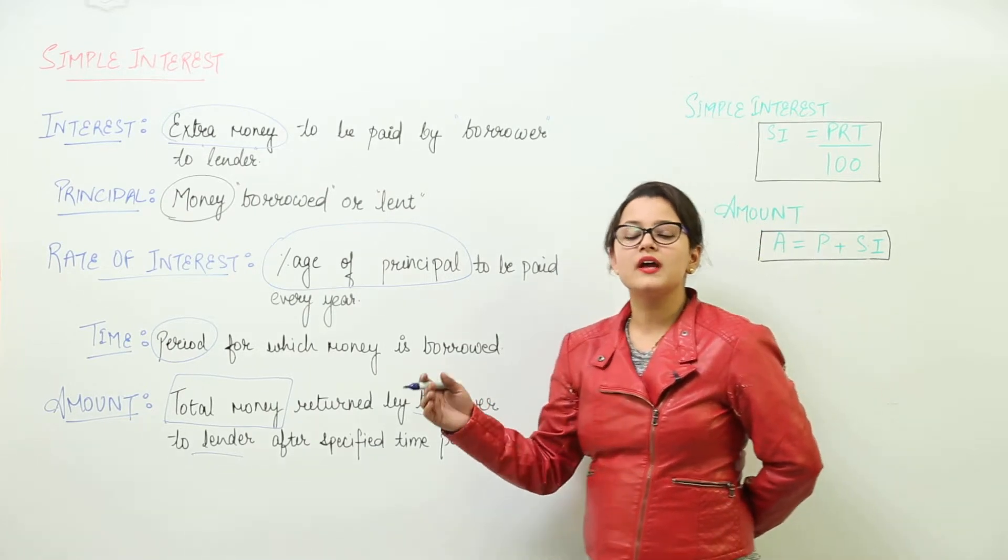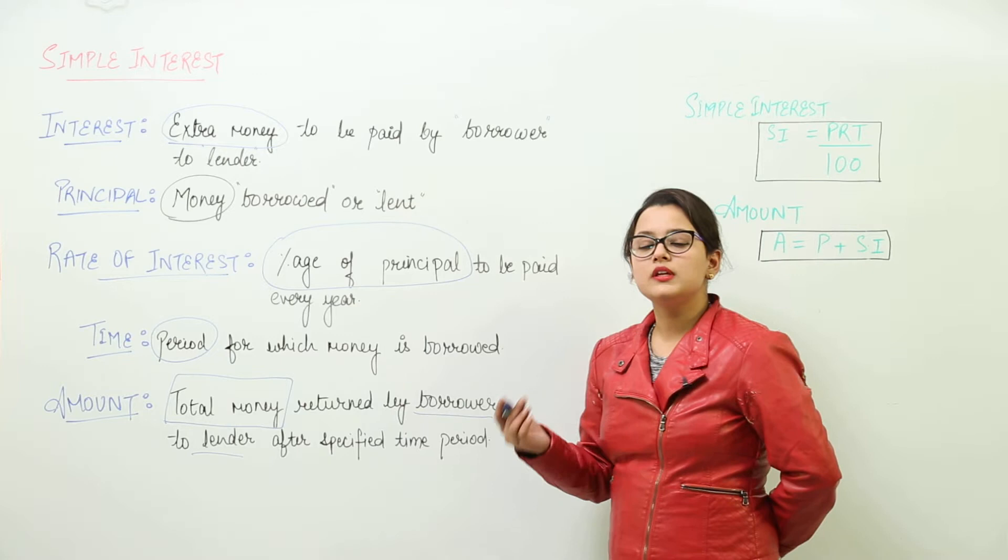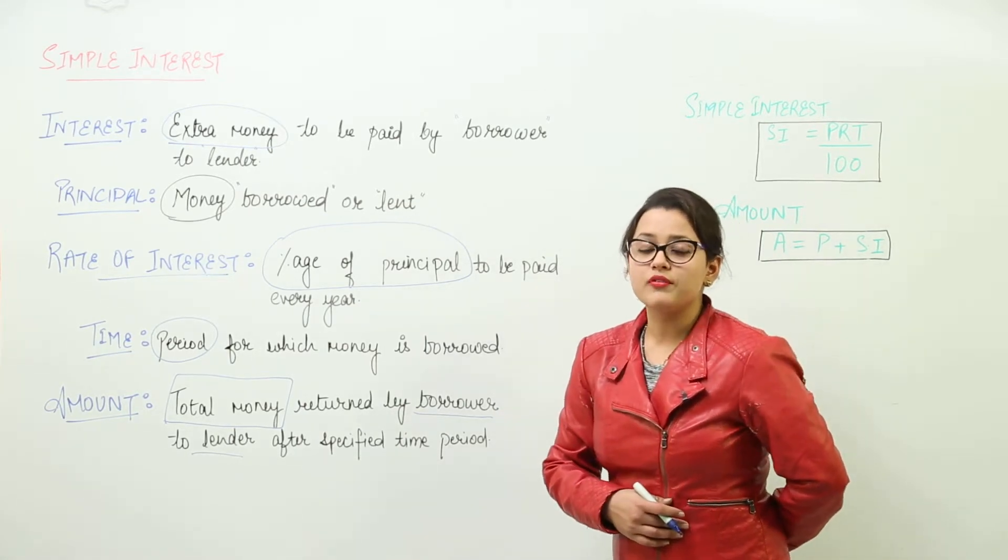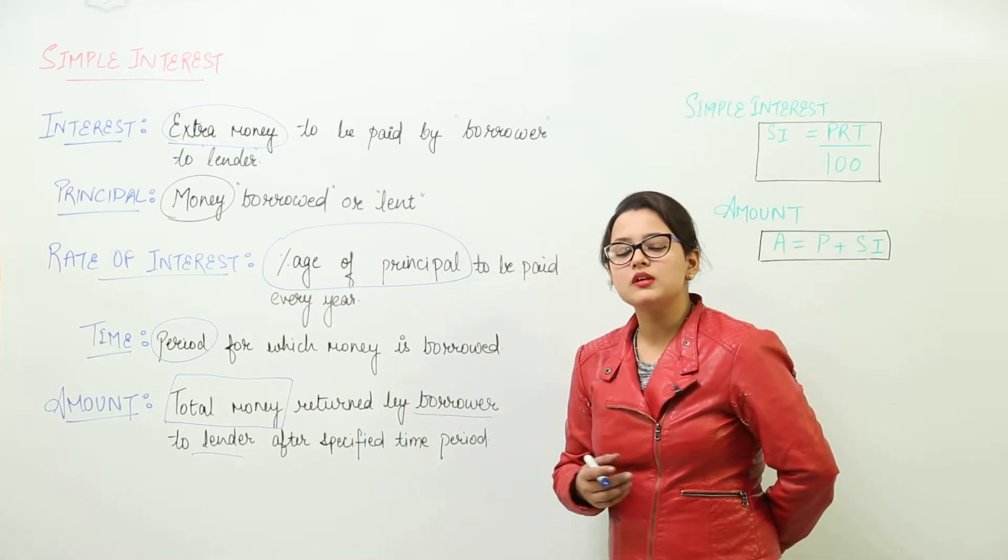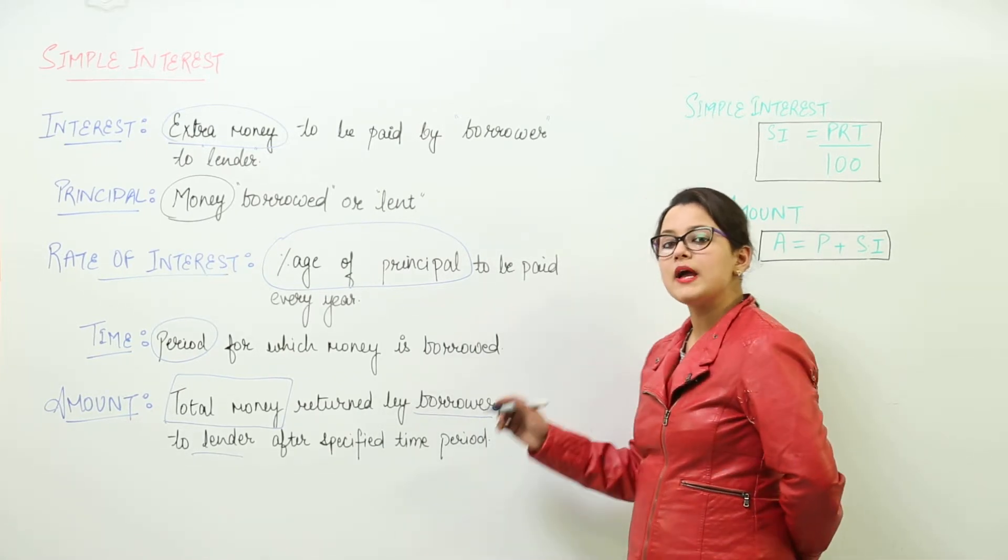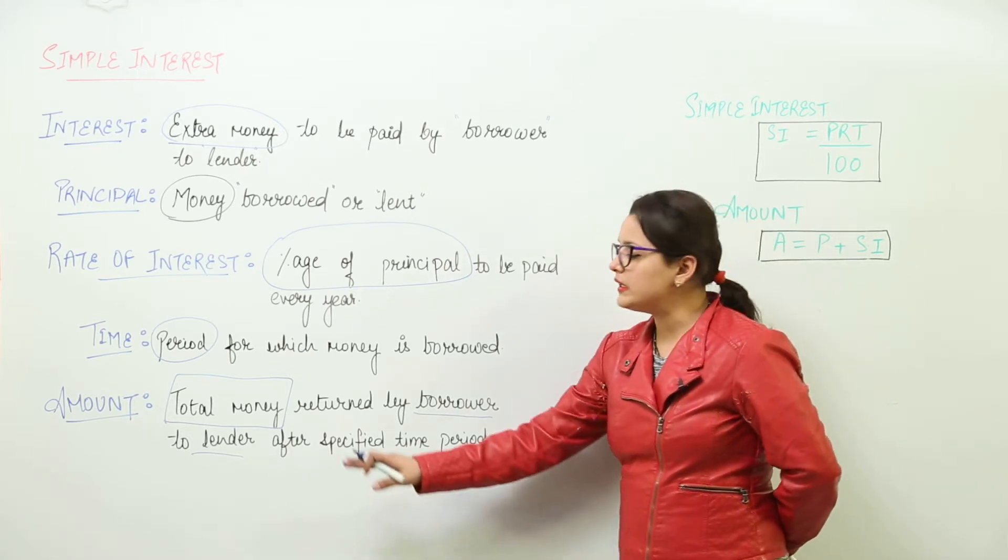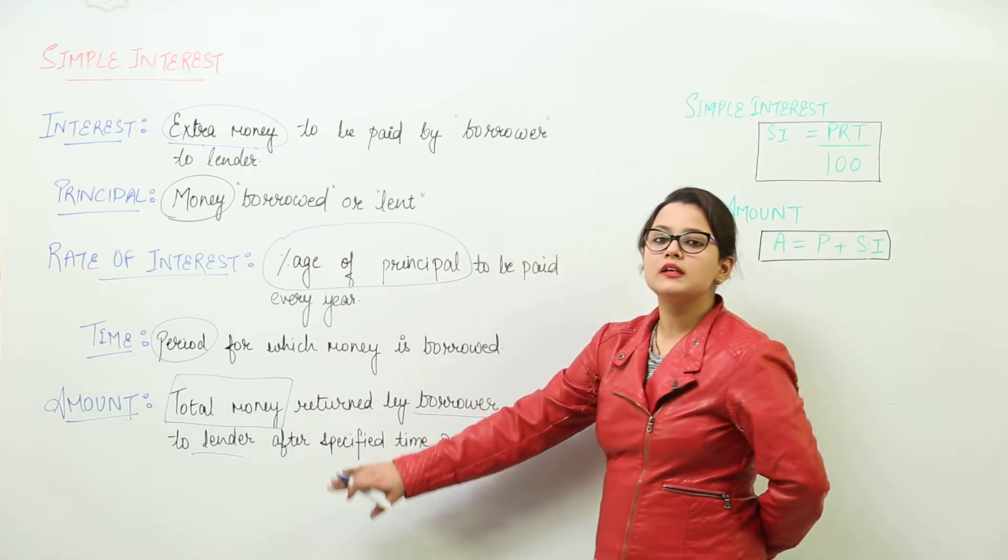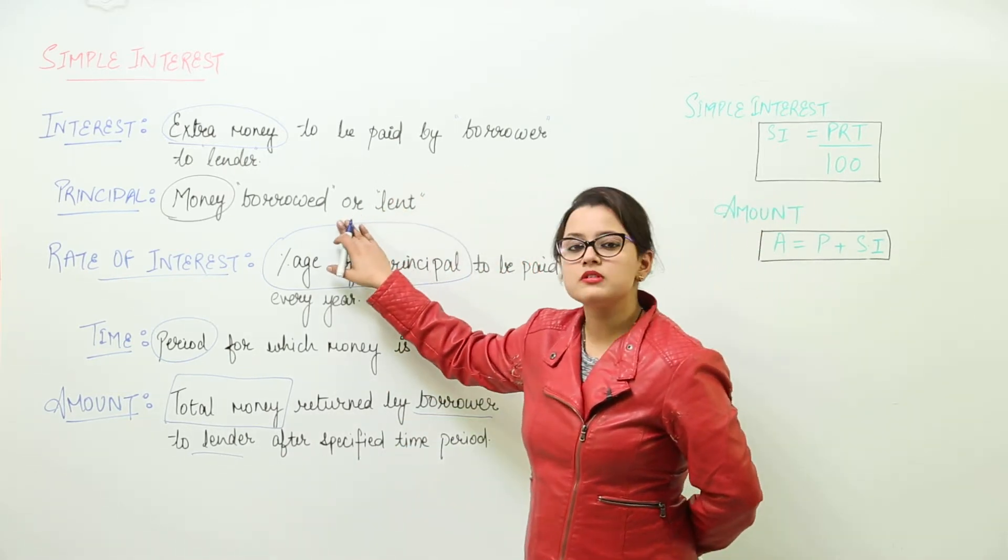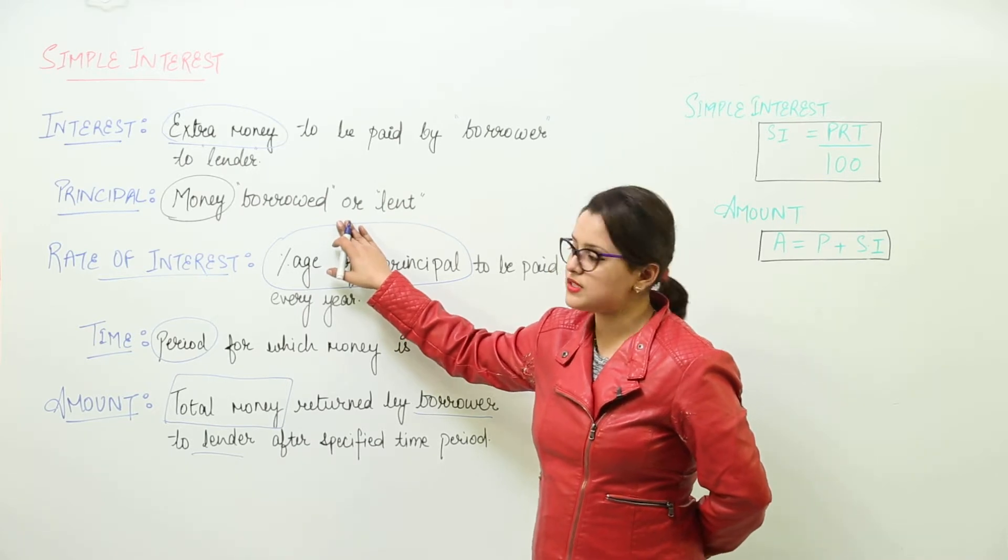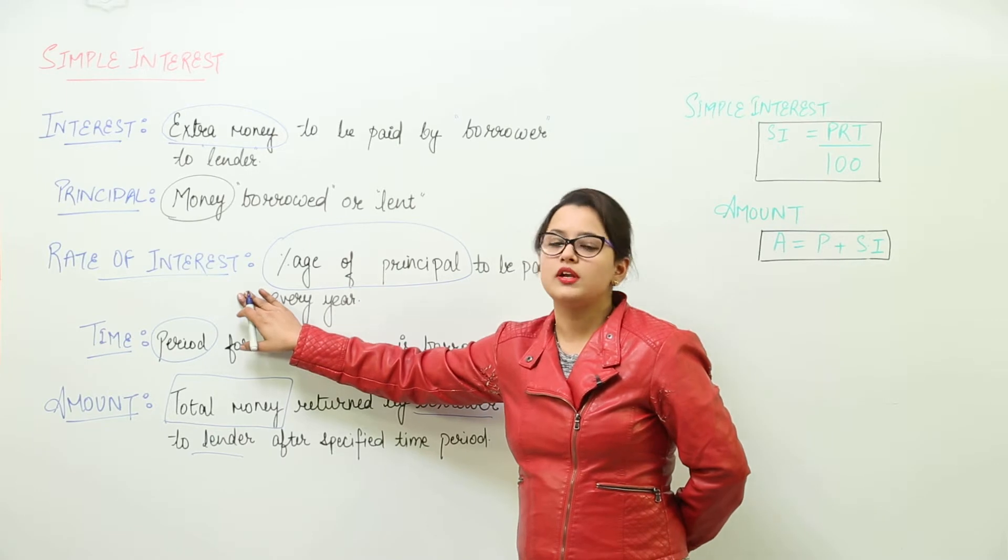For example, I had borrowed 100 rupees from my friend. Now I will be returning back 110 rupees to her after a year. So after a year, how much money am I returning back to her? I am returning back 100 plus rupees 10, that is 110. So 110 rupees is my amount. Out of that, 10 rupees is my interest. What was my principal? 100 was my principal. And what is the rate of interest? 10% is the rate of interest.